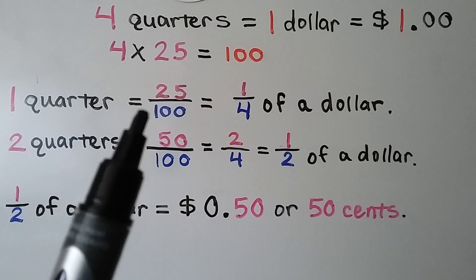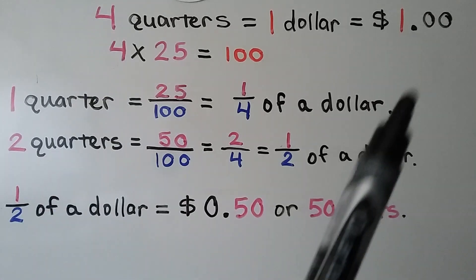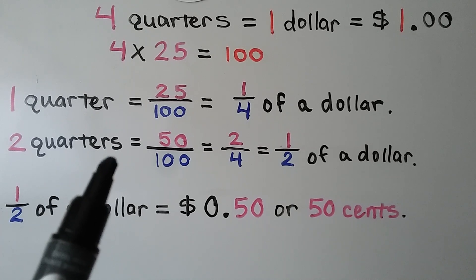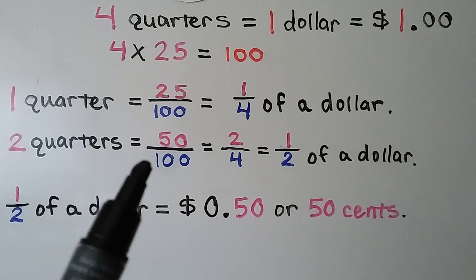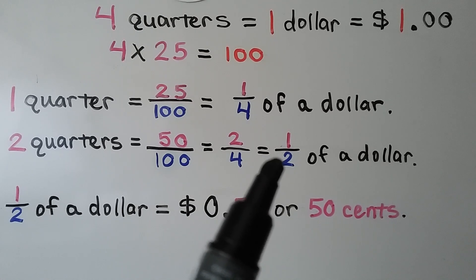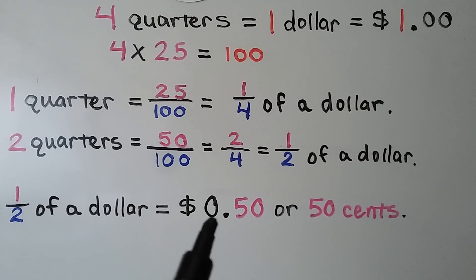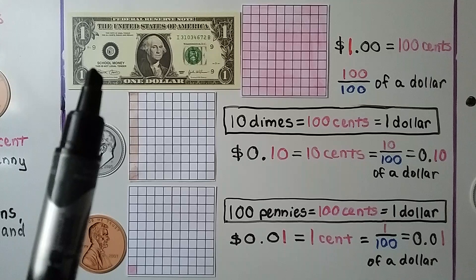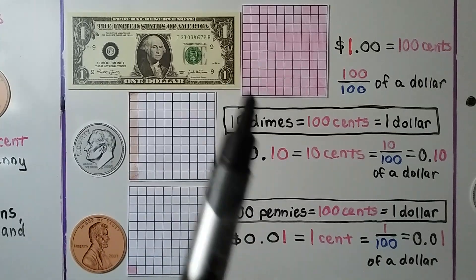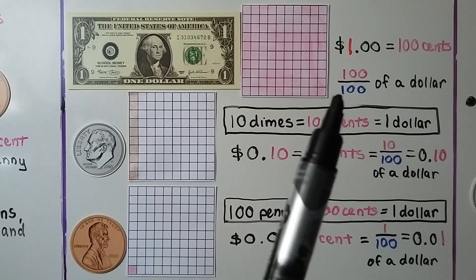One quarter is worth 25 cents — it's 25 of 100 parts, equal to one-fourth of a dollar because we need four of them to make a dollar. Two quarters equal 50 cents, which is 50 hundredths — two quarters out of four quarters, equal to half a dollar, because 50 and 50 makes 100. Half of a dollar is 50 cents, written as $0.50. One dollar bill is 100 parts of 100 cents — equal to 100 cents, or 100 hundredths of a dollar.